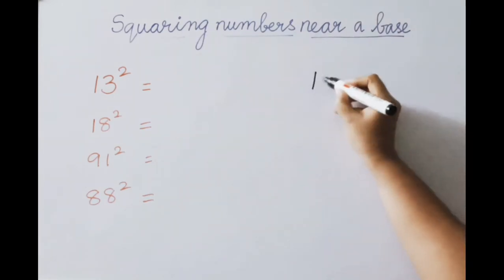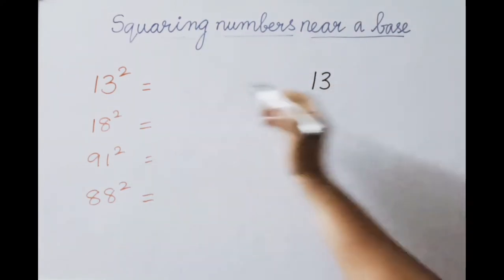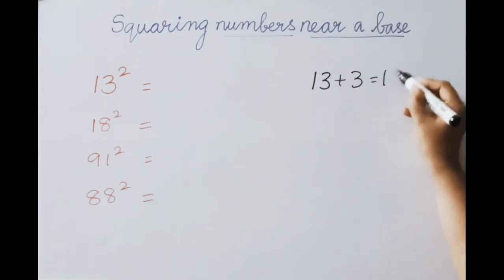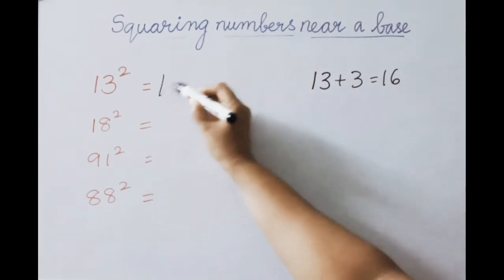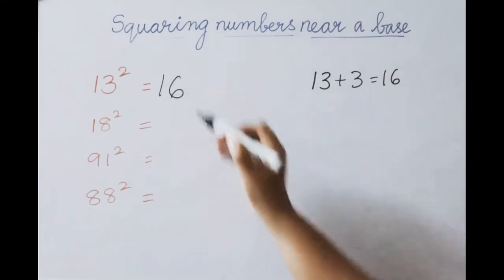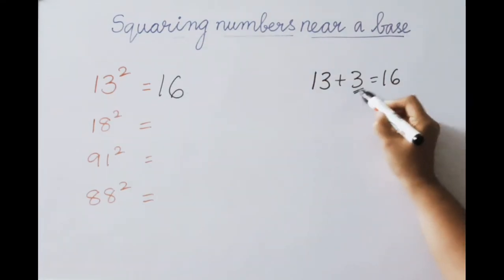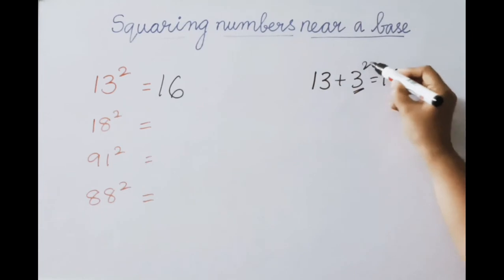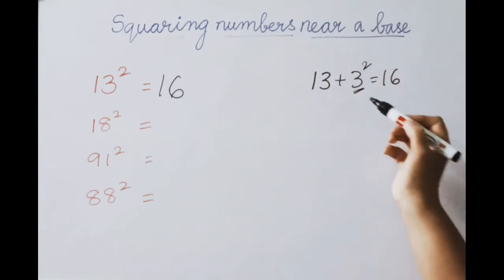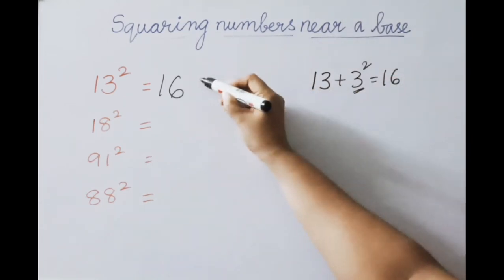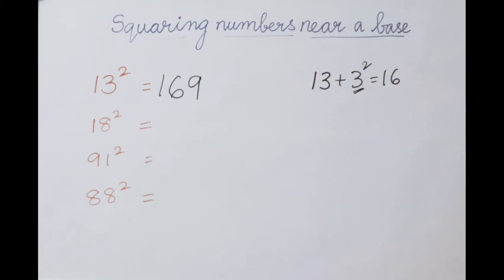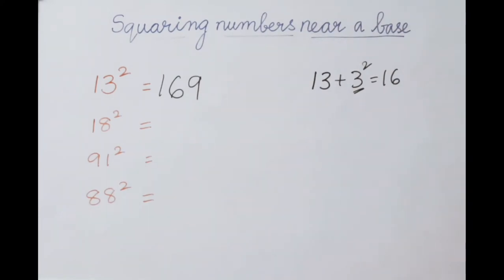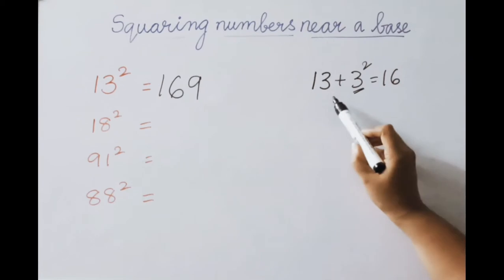Our number is 13 and the excess value is 3. So 13 plus 3 equals 16 — that is our first part answer. The excess value is 3, so square of 3 is 9 — that is the second part. So 13 squared equals 169.